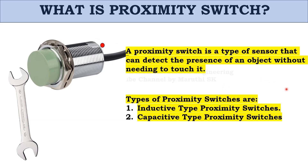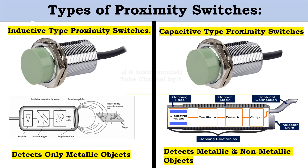Types of Proximity Switches: there are two types present in the market — Inductive Type and Capacitive Type. Both look the same in physical appearance, but the internal working principle is different. The Inductive Proximity Switch detects only metallic objects, while the Capacitive Proximity Switch detects both metallic and non-metallic objects.